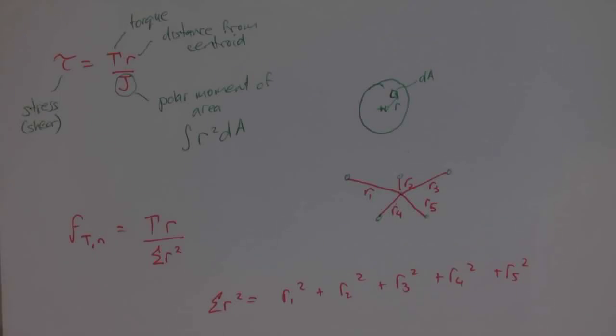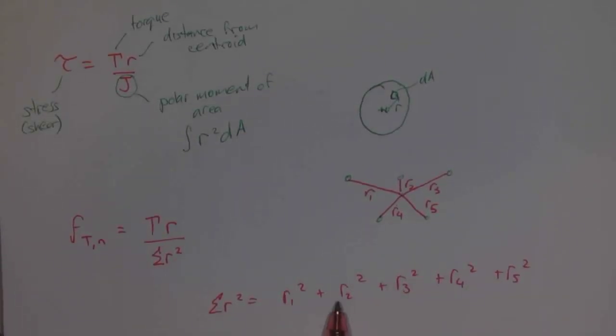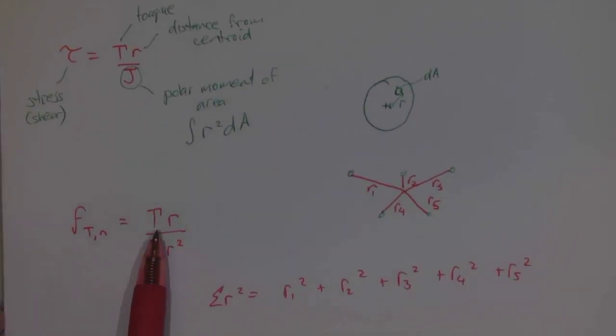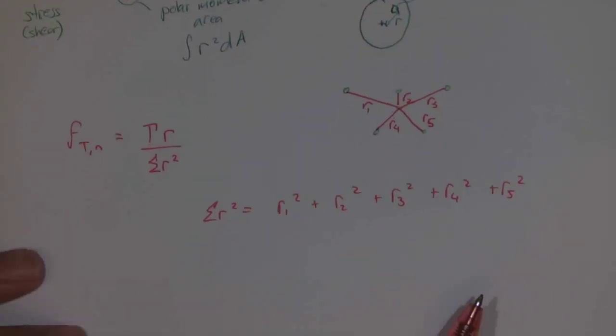So the next thing that we're going to look at is, we need to find out what each one of these values of R are equal to, and then we can add them together to find out R squared, and then we'll use that within this formula.